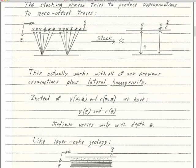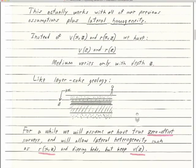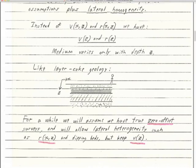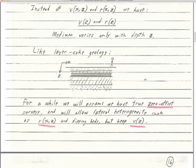Lateral homogeneity is the key to making the stack look like true zero offset data. The stacked multi-offset data will look the most like zero offset data when we have lateral homogeneity — when velocity and reflectivity depend only on z. If velocity has arguments x and z, I really do mean a 2D varying, laterally heterogeneous velocity field. But if velocity depends only on z, that's the assumption of lateral homogeneity — layer cake geology, like you find in the Colorado Plateau. We can handle that with land data and stacking to approximate zero offset data.